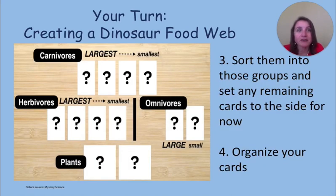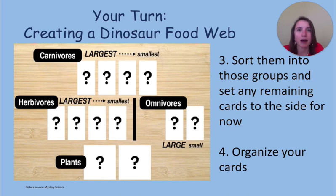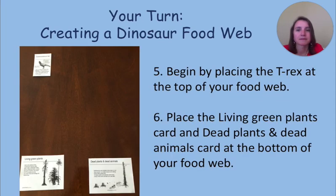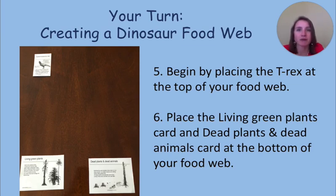Before you start your food web, here's a tip to help keep your cards organized. Take your carnivores and line them up largest to smallest. Then line up your herbivores, largest to smallest. Next, line up your omnivores. And then place your plants down at the bottom. Now that we have organized all of our cards, we can start creating our food web. Begin by placing the T-rex at the top of your food web. Then place the living green plants card and dead plants and dead animals card at the bottom.